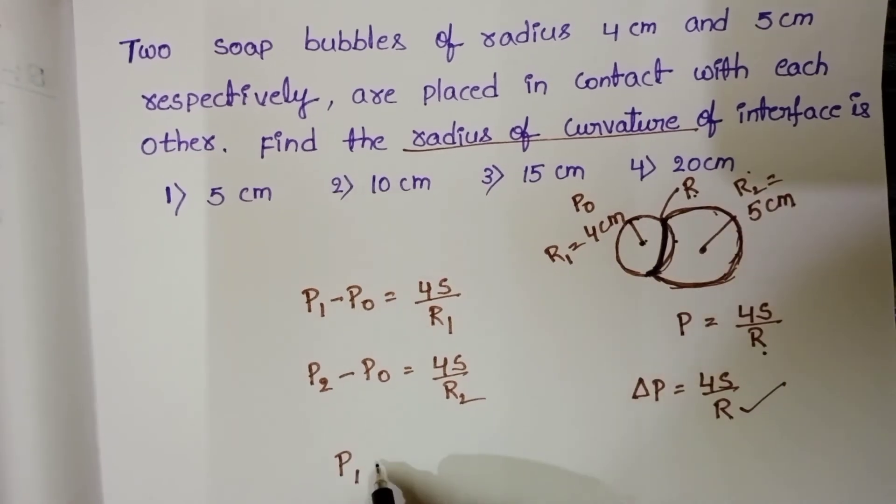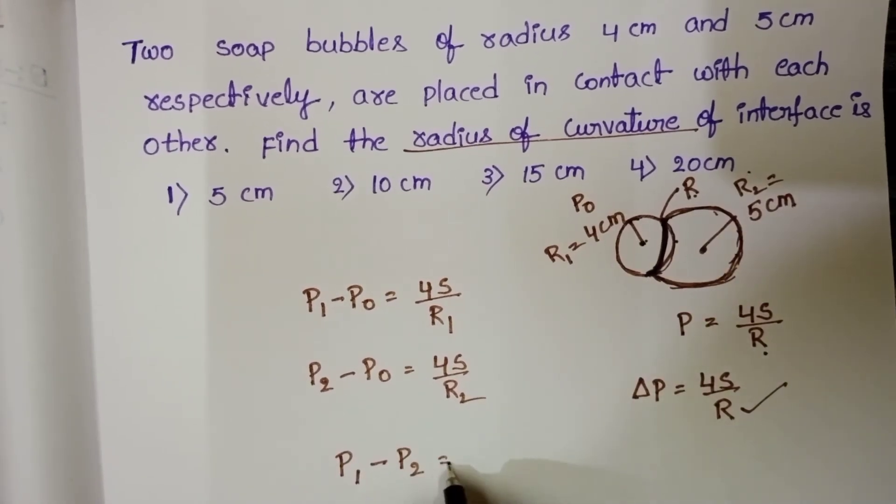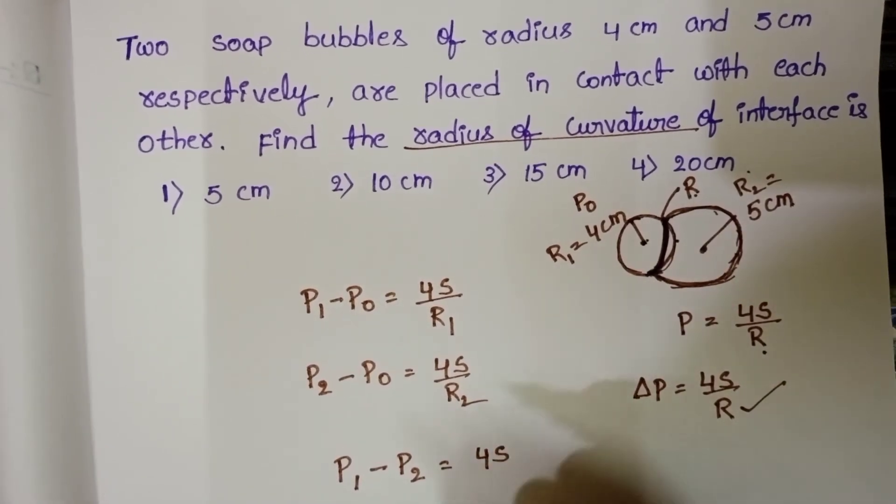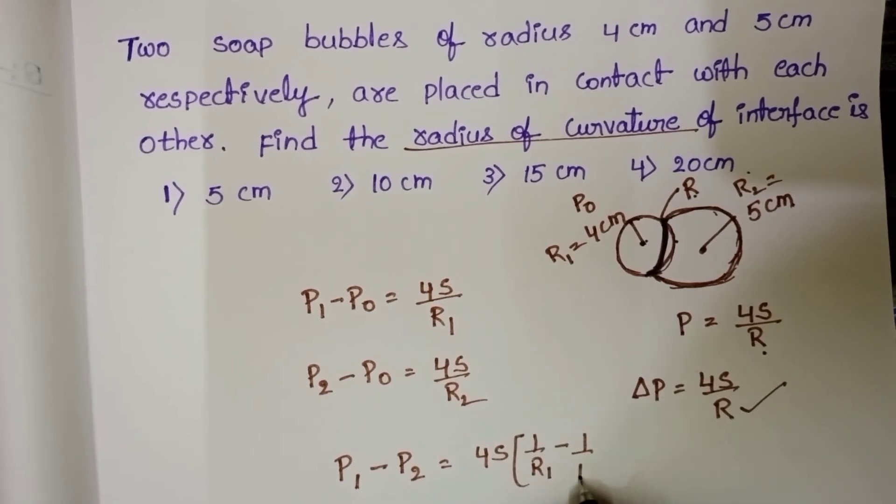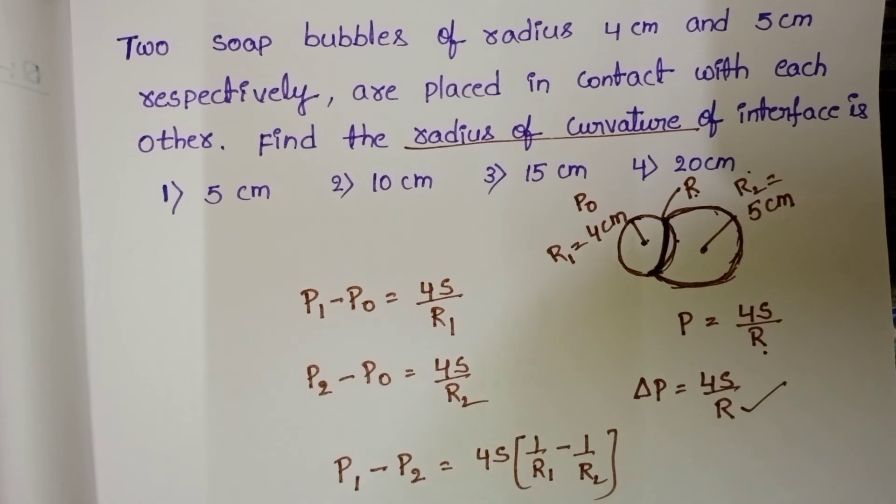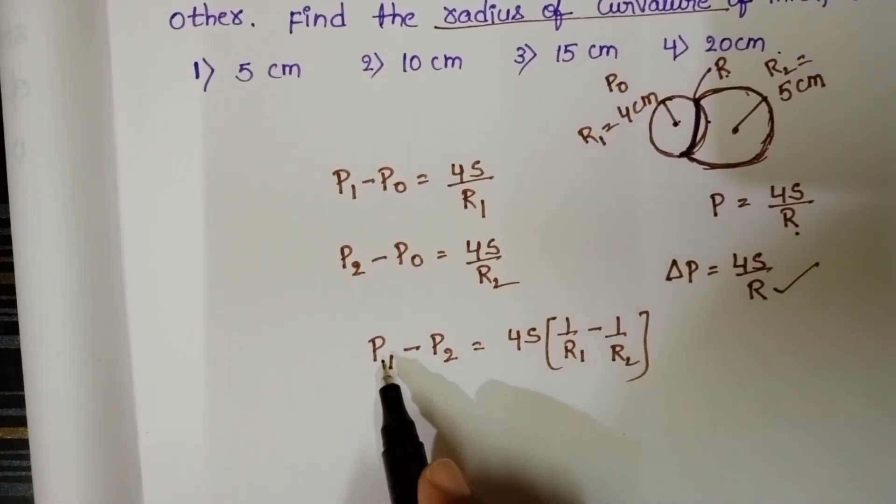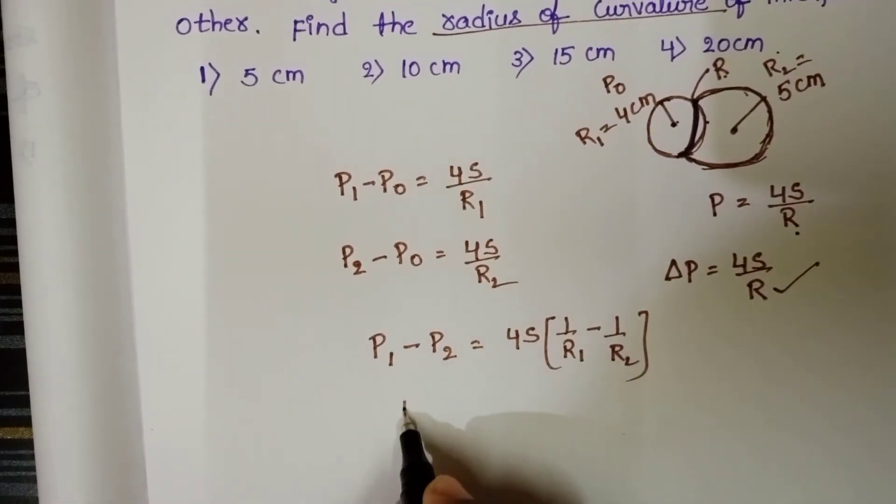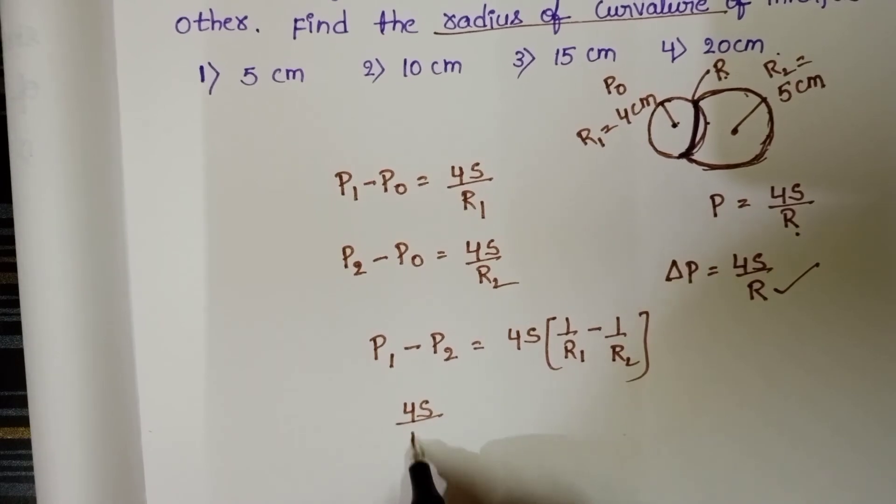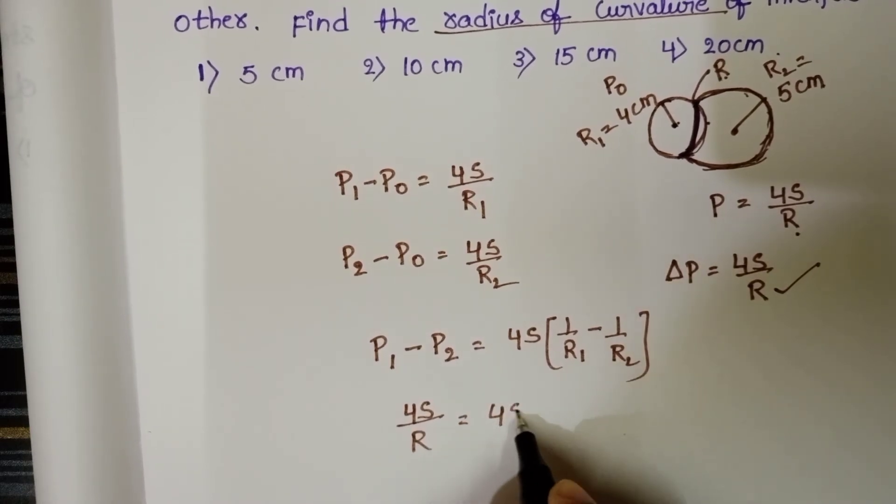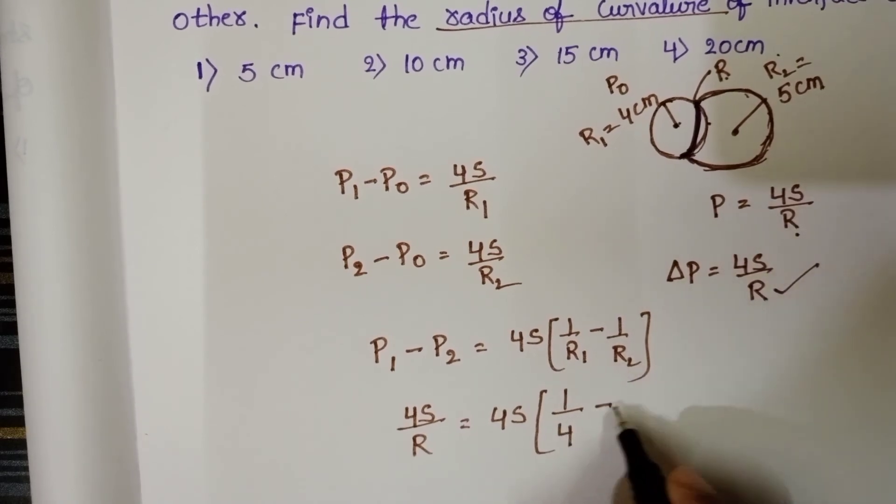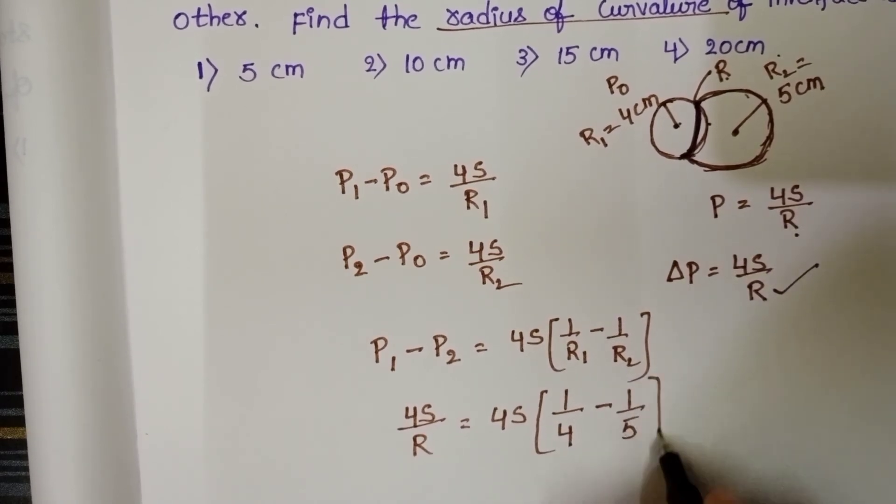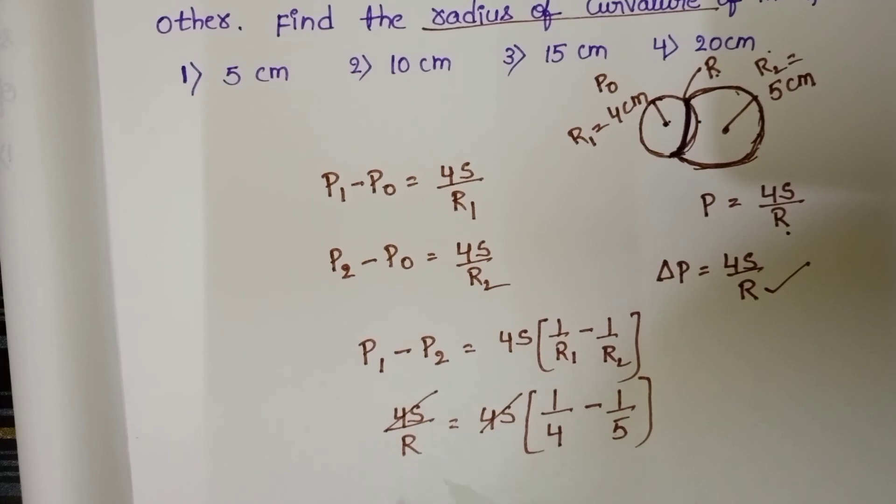Now from this, pressure difference P1 minus P2 equals, take 4s common, 4s into 1 by R1 minus 1 by R2. And in place of P1 minus P2, 4s by R equals 4s into, R1 is 4 centimeters and R2 is 5 centimeters. On both sides 4s gets cancelled.